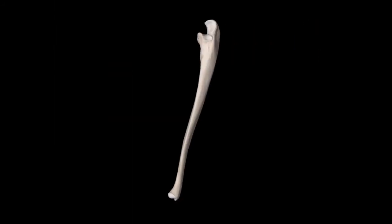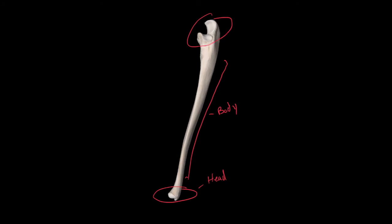Now moving on to the ulna. The ulna is unique because the head of the ulna is located on the distal end of the bone. We have a body of the ulna. There's a ridge on the lateral aspect of the body of the ulna — this is going to be called the interosseous border of the ulna, meaning the border between two bones, between the radius and the ulna.